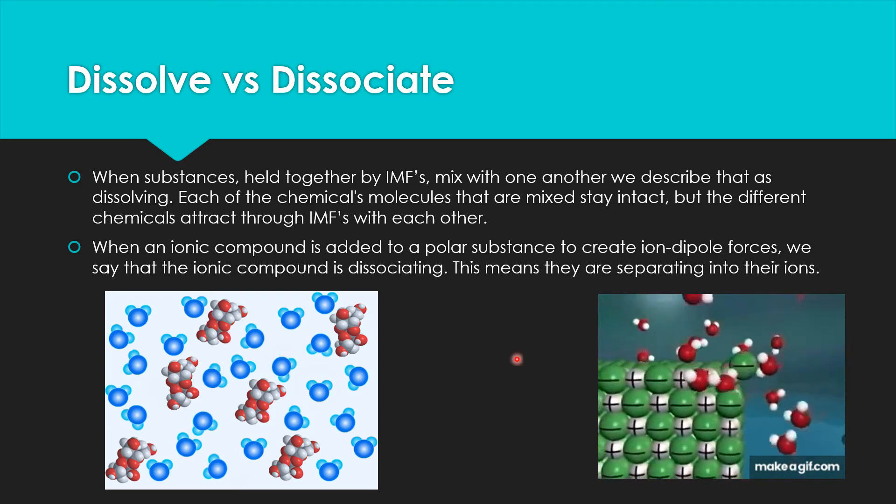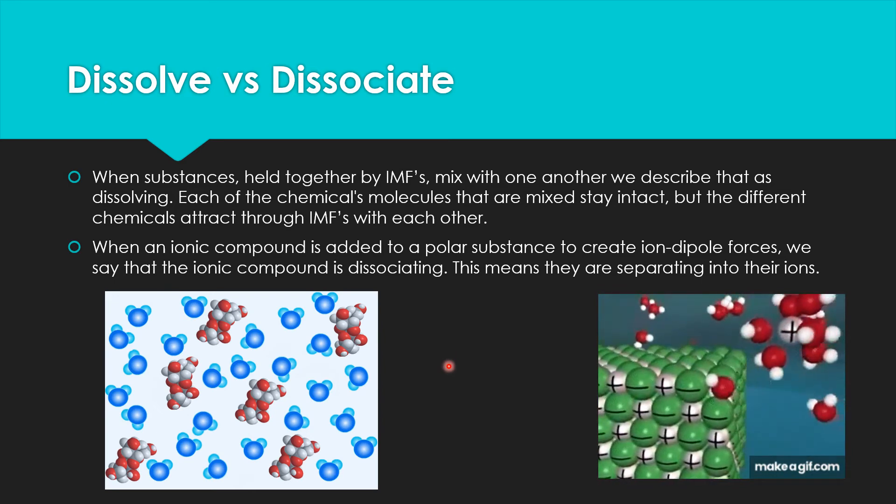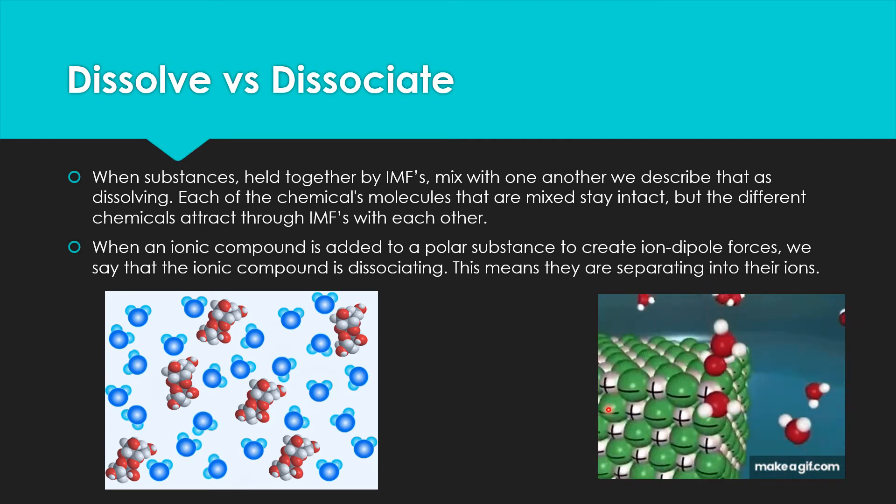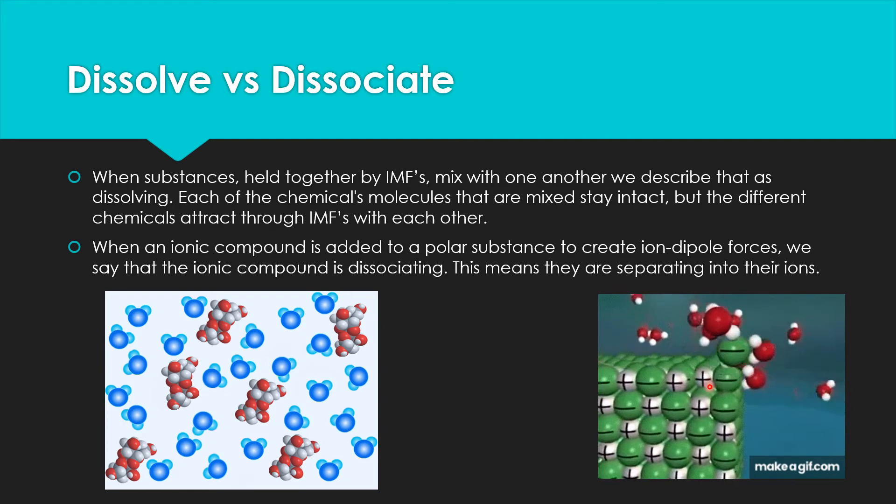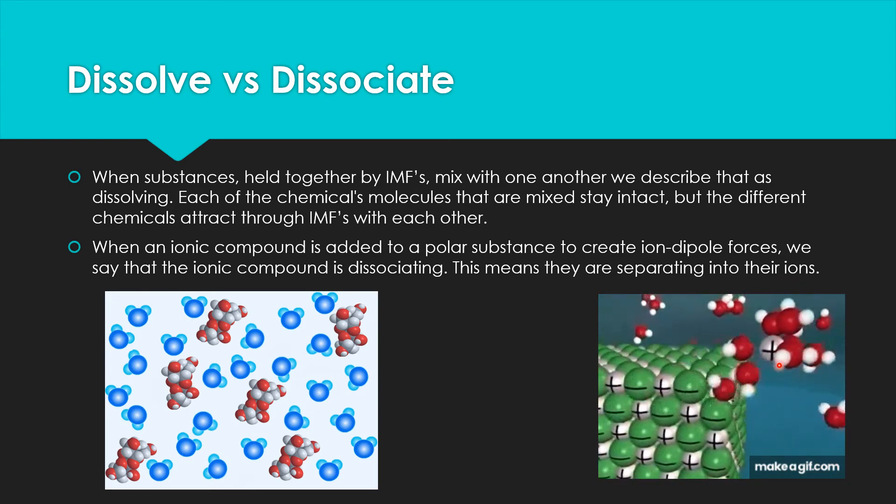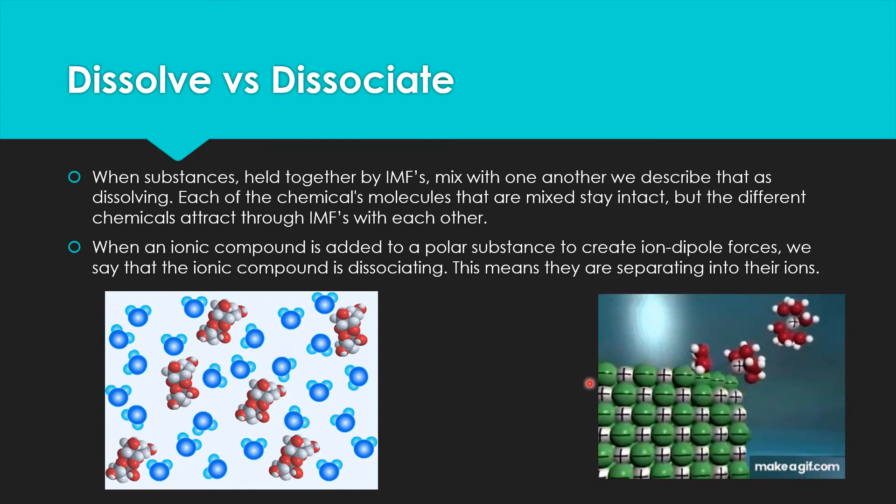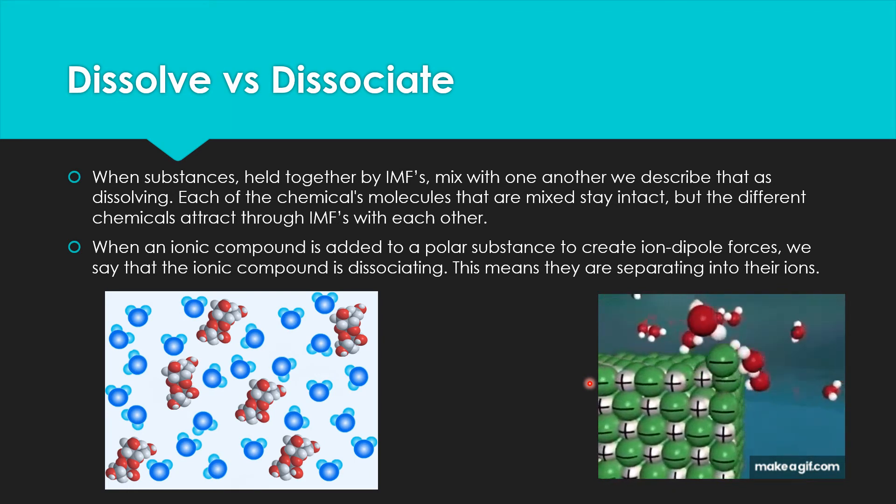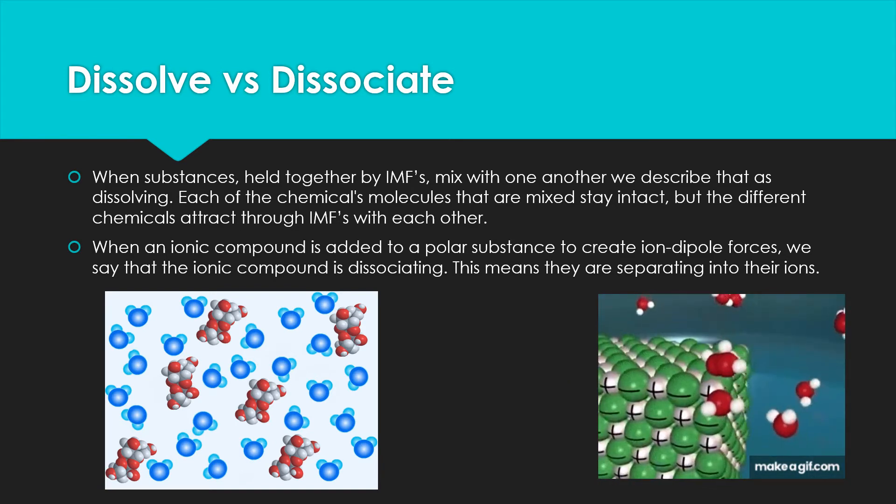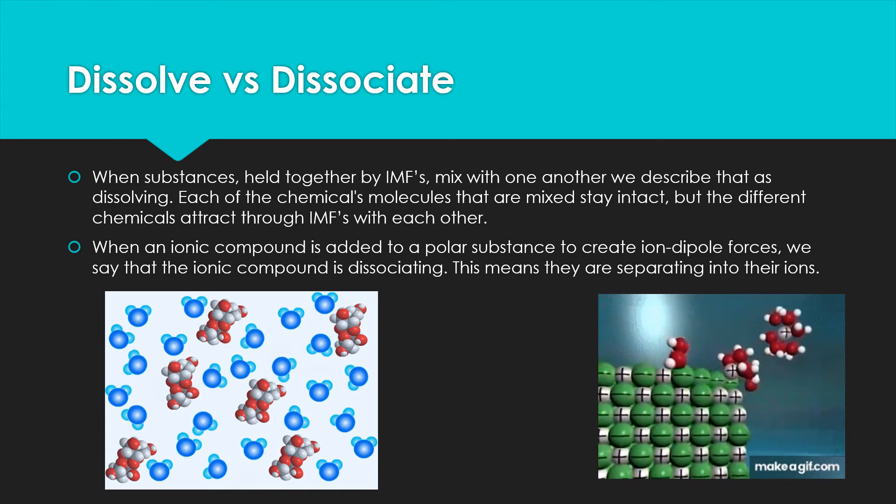Now when an ionic compound like sodium chloride is added to a polar substance to create ion-dipole forces, we say that the ionic compound is dissociating. This means they are separating into their ions, so the ions are actually breaking away from each other. And you can see in the animation here that the positive sodium or positive ions are surrounded by water with the red oxygen surrounding that positive ion, because the oxygen side is negative and it's going to attract to the positive ions. When we look at the negative ions in green there, we can see that the positive hydrogens come in and surround those negative ions. So those are interacting with those ion-dipole forces. So we call this dissociating.